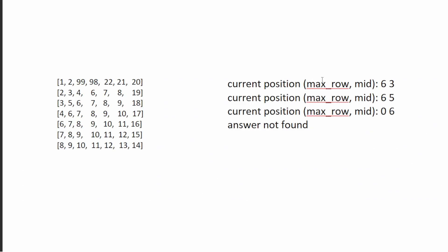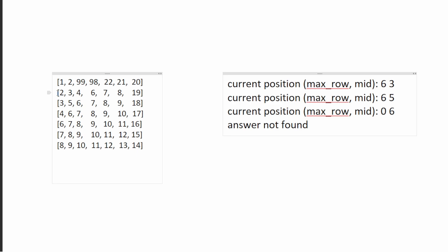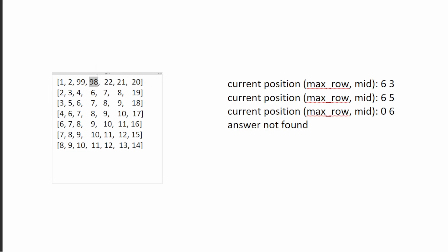Here is the test case it failed on, reformatted for clarity. The 'max row' column shows which row was selected, and 'mid' represents the outer binary search column position. In the first iteration, mid is column 3 and the inner binary search finds row 6 as the peak of that column — which is indeed a peak for that column. However, it's not a global peak because the right neighbor is bigger, so we move right.